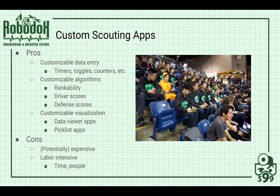My personal favorite is a custom scouting app — what I spent my time at Citrus Circuits developing. We designed it from scratch, choosing our own data points, how data was entered, and collecting more data without scouts having to manually enter it. Features included toggles for yes/no actions, counters to increment scores with a single button press, and timers that start and stop with a button press, creating a full timeline from T=0 to T=135 seconds. This was great for calculating cycle times and finding the point in a match where scoring a particular task stopped mattering.